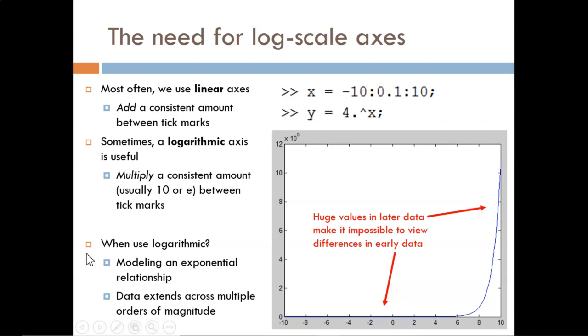This means that a magnitude 7 earthquake has vibration amplitudes ten times larger than a magnitude 6 earthquake. Two common reasons to use a logarithmic scale for one or both axes are: one, to model a known exponential relationship, or two, when data extends across a dramatically large range, spanning multiple orders of magnitude.